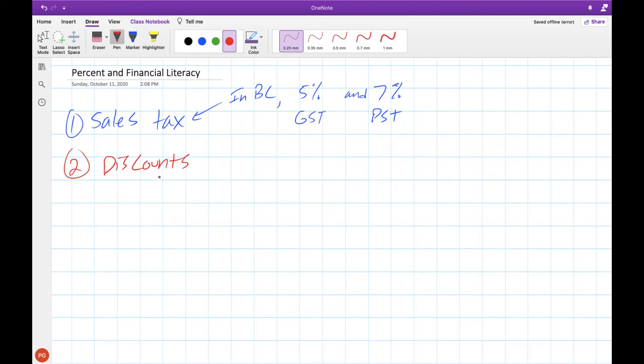The other place that we see this is on discounts, so you might see in stores something like 30% off or something like that, where they're saying that there's some discount. That's the other time that we often see percentages show up when we're talking about money. Now let's use what we know about sales tax and discounts in combination with percentages and see if we can't solve some problems.